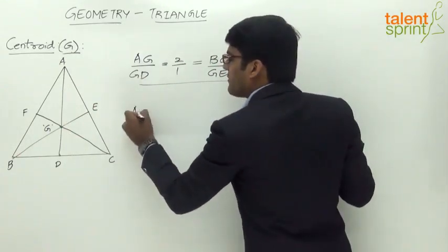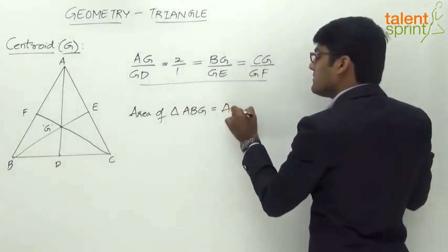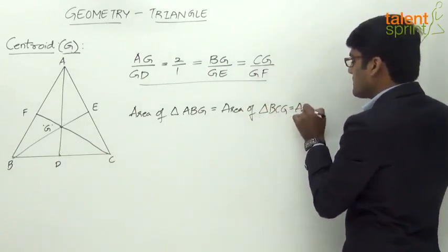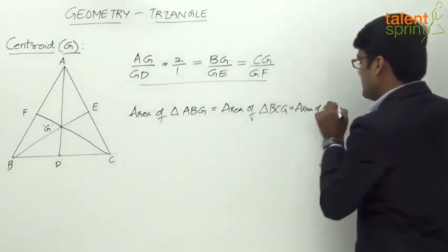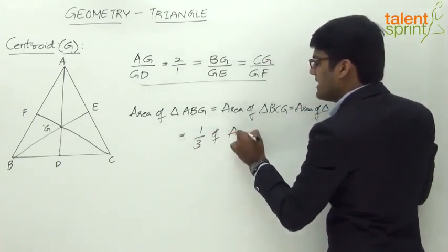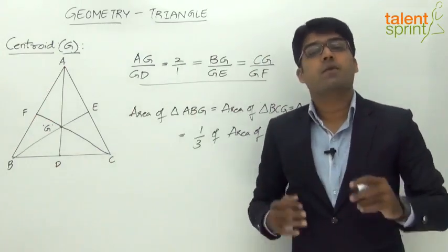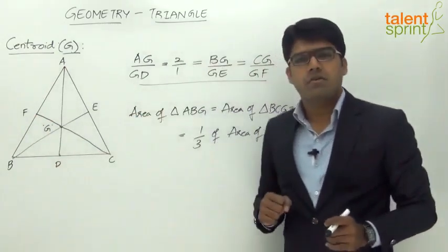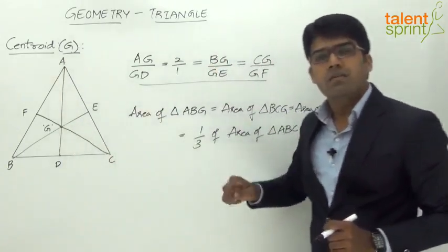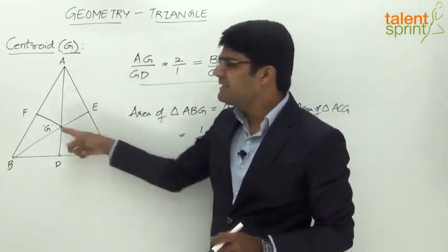The area of each of these smaller triangles is equal to one third of the original triangle. So the area of triangle ABG equals the area of triangle BCG equals the area of triangle ACG, and each equals one third of the area of triangle ABC. For example, if the area of triangle ABC is 48 square units, then the area of triangle ACG equals one third of 48, which is 16 square units.